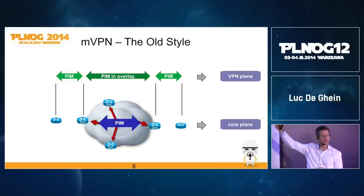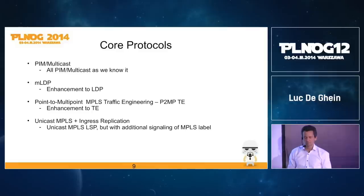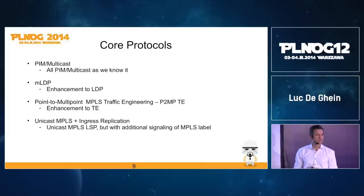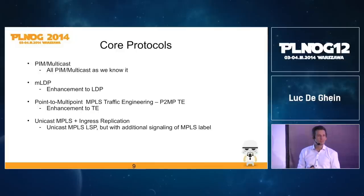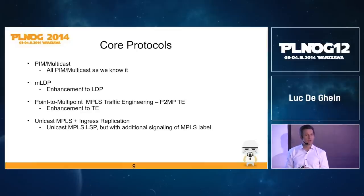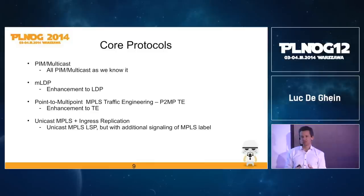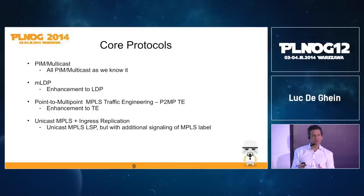With the next generation models we have more choices. We still have the old PIM multicast in the core — still supported and still seeing development. But now we also have MLDP, which is an enhancement to LDP. The M stands for multipoint — it's LDP signaling but for multicast traffic in a multipoint fashion. It's essentially the LDP protocol we know, just with a few enhancements.